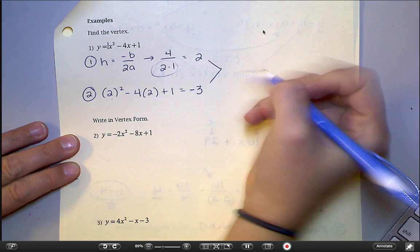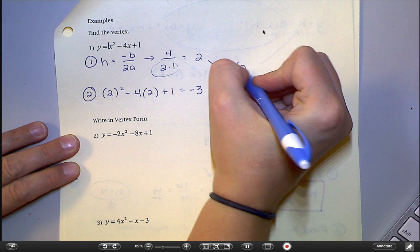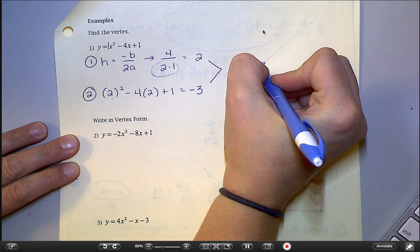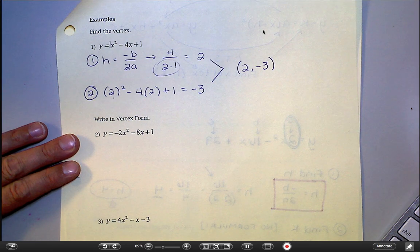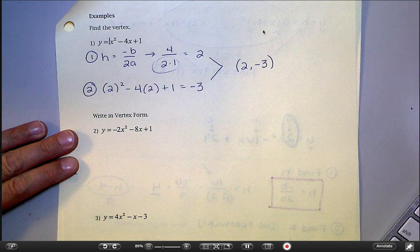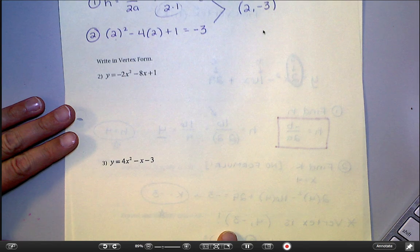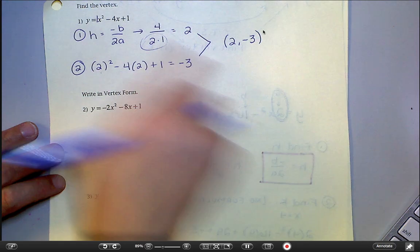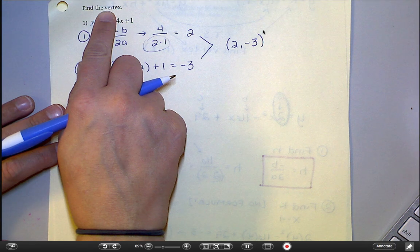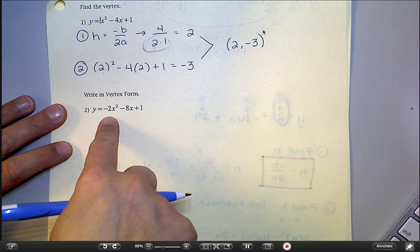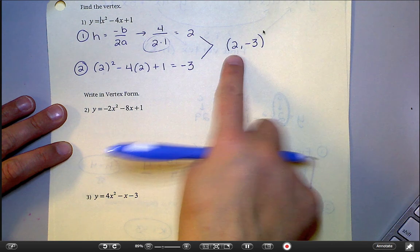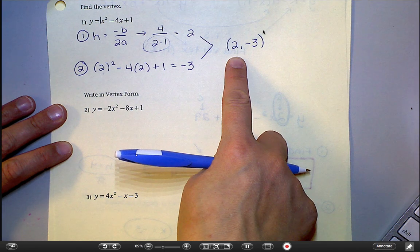And so then my vertex would just be 2, negative 3. And I'm done there because this one just asked me to find the vertex. I don't have to write it in vertex form like these next ones. I just have to get to the point where I have h and k.